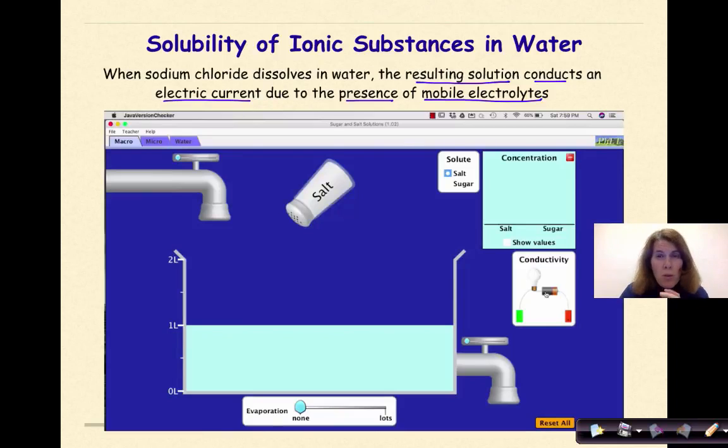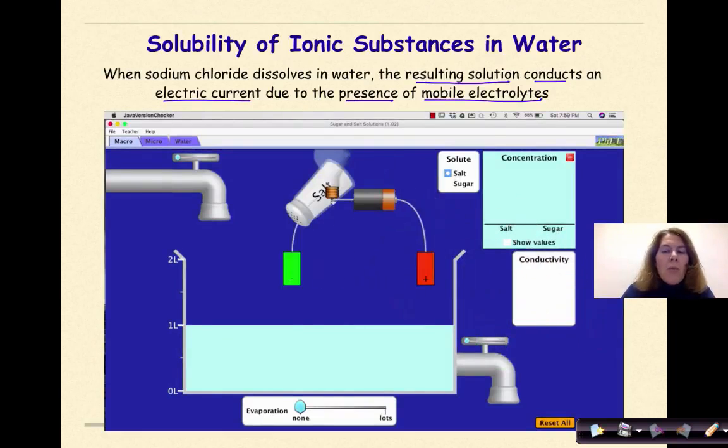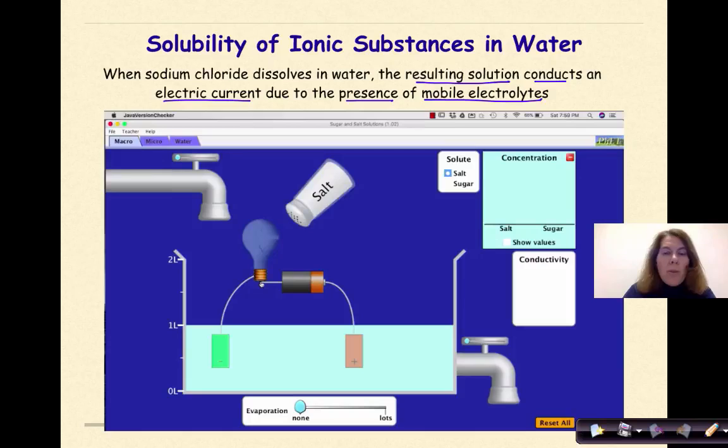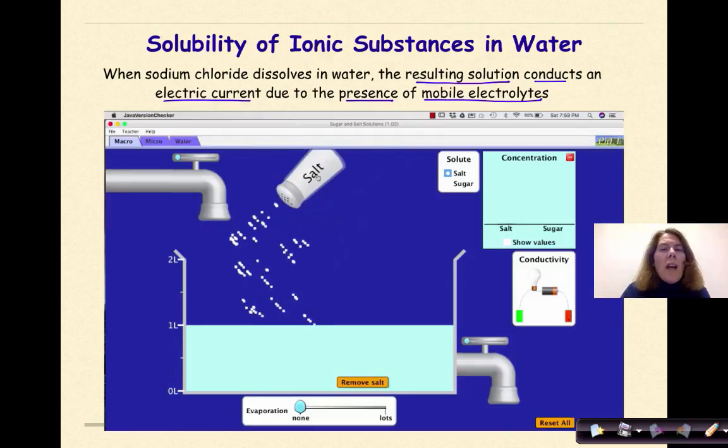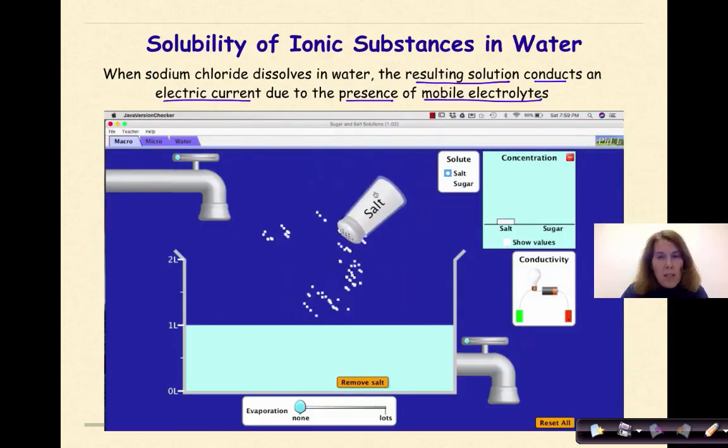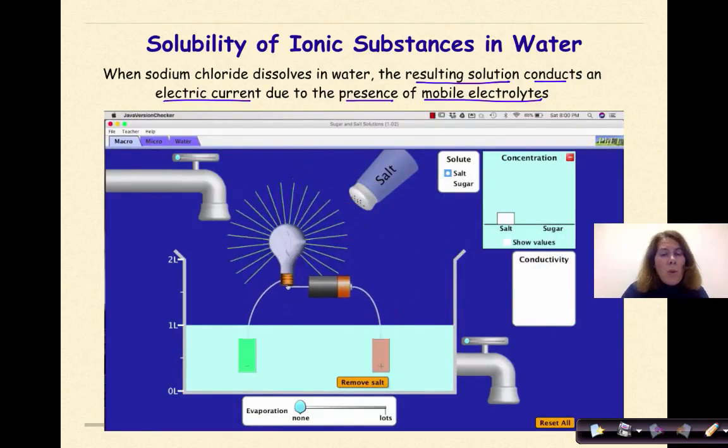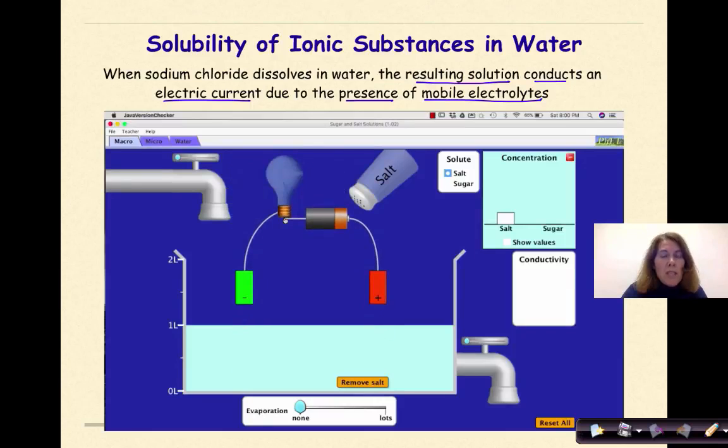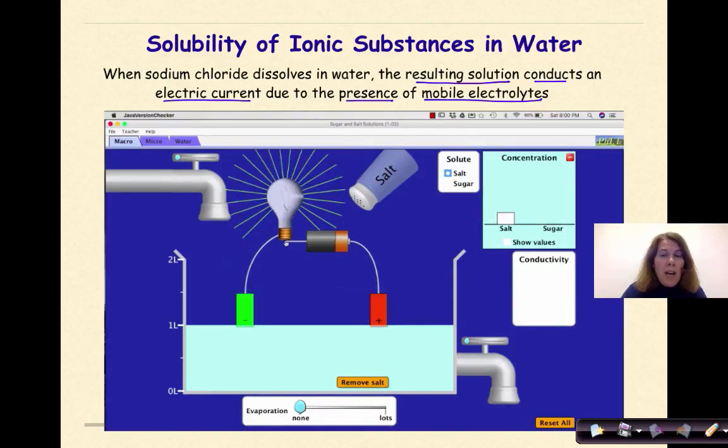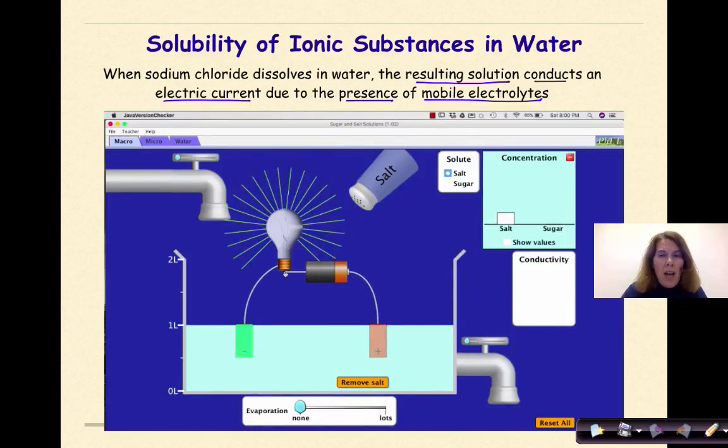When it forms those charged particles, electrons are able to move through the solution. If we look in this simulation, if we put a conductivity tester into pure water, the light bulb is not going to go on because there's no charged particles. But once we start adding the sodium chloride, as in the salt here, we know that there will be sodium ions and chloride ions being added—charged particles. Now, when we put the conductivity tester in, we can see that the light bulb went on. See, on, off, and on again.